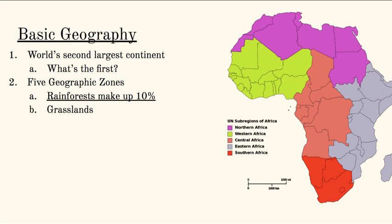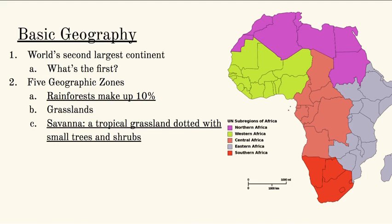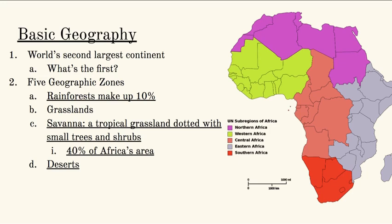You have the grasslands — the open, open Sahara type area. The savannah is the tropical grassland dotted with small trees and shrubs. This is what we think of when we look at the Lion King: that grassland with a little bit of that tropical sense, and plenty of plant life for animals to hide or use as food. That makes up about 40% of Africa's area. Then we get to the deserts — deserts are also 40% of Africa's area.